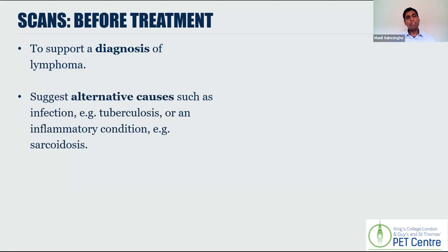But importantly, at that stage when we look at scans, it's important to think about alternative causes for why a person may have enlarged lymph glands or nodes. Common things we think about, and may be able to identify on the scan, would be infection, something called tuberculosis, or an inflammatory condition such as sarcoidosis, which, although non-cancerous, can still cause significant ill health.